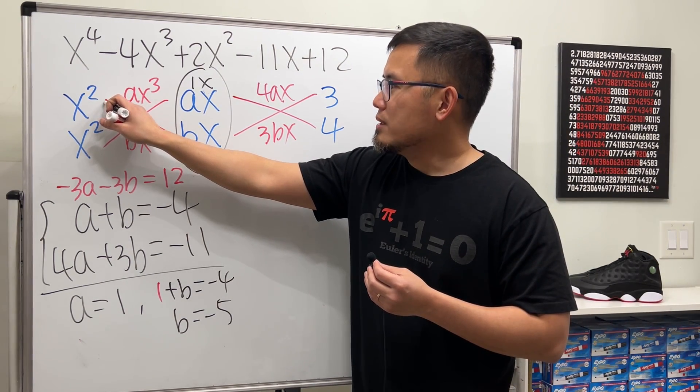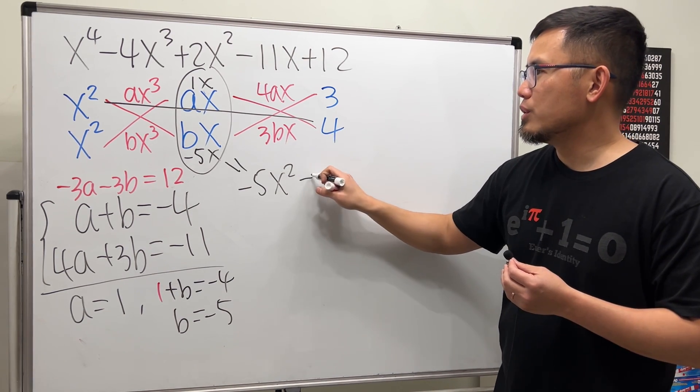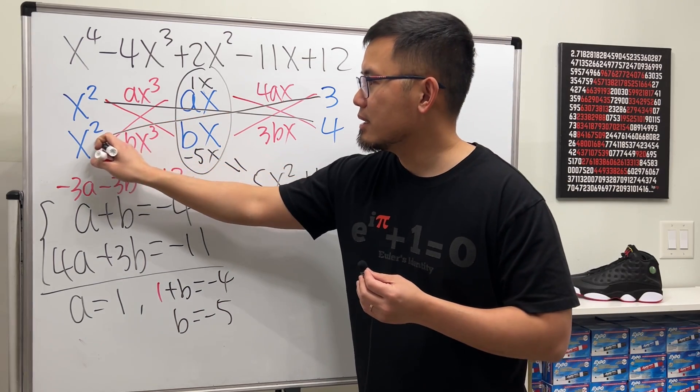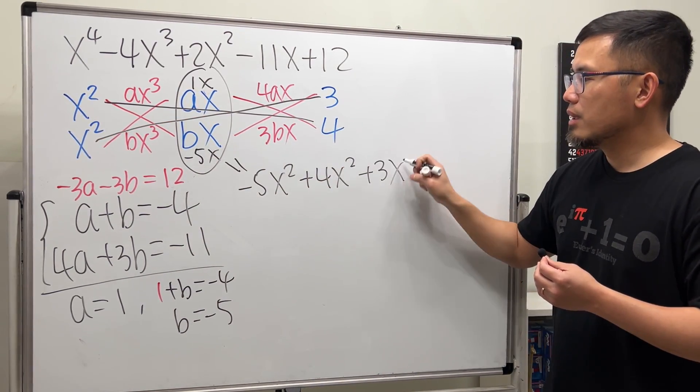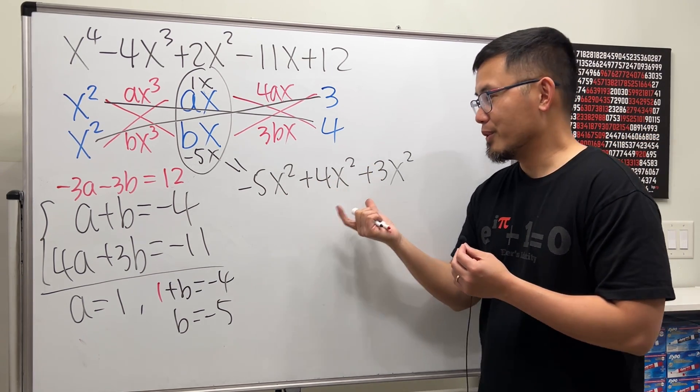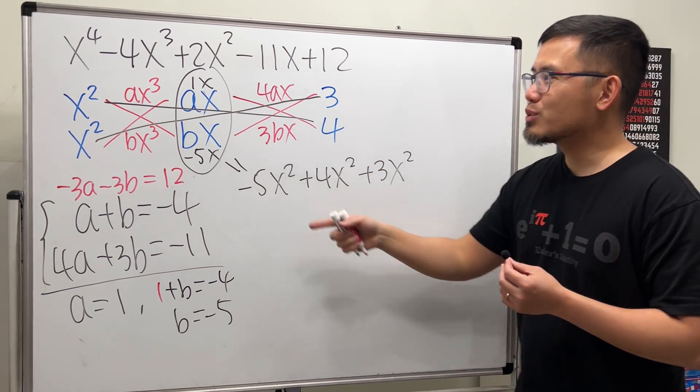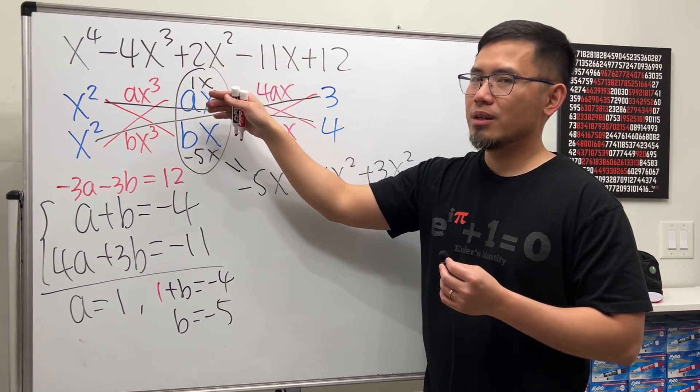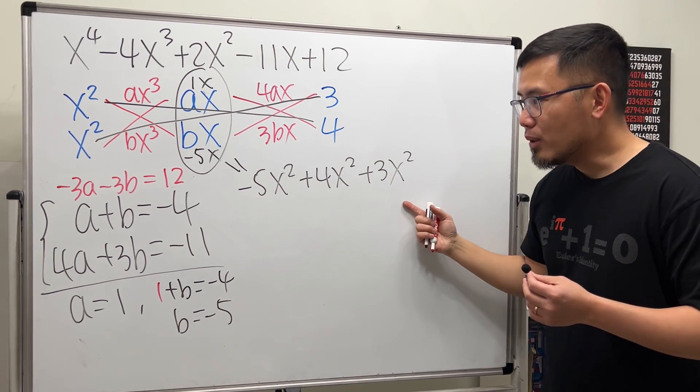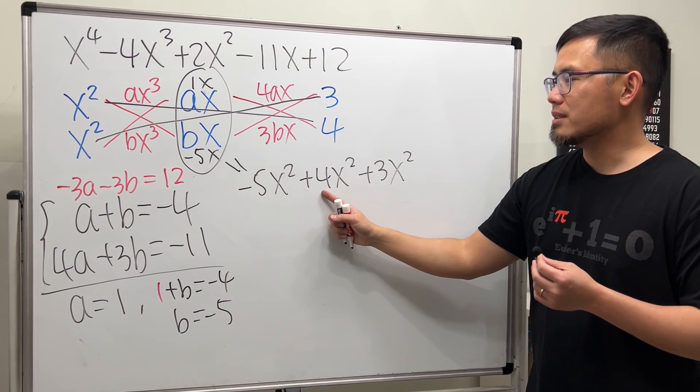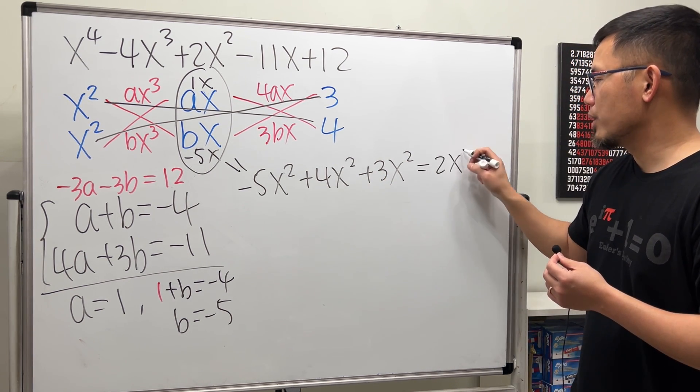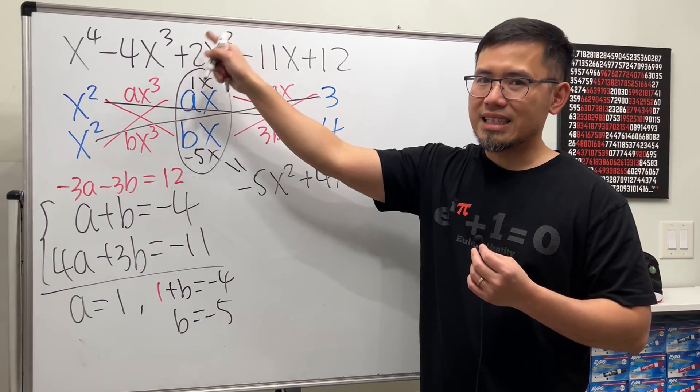You do this x squared times 4 which is 4x squared and you do this times that which is 3x squared. So these are these 3 x squared terms that you have to pay attention to. That's why earlier you cannot just say 2x squared just break it down as 2x times x. Cannot do that. In fact, if you combine all of them, negative 5 plus 4 is negative 1 plus 3 is indeed equal to 2x squared. So, that matches with that. That's the final check.